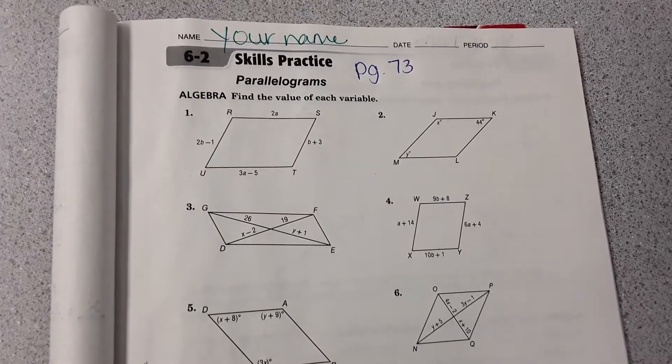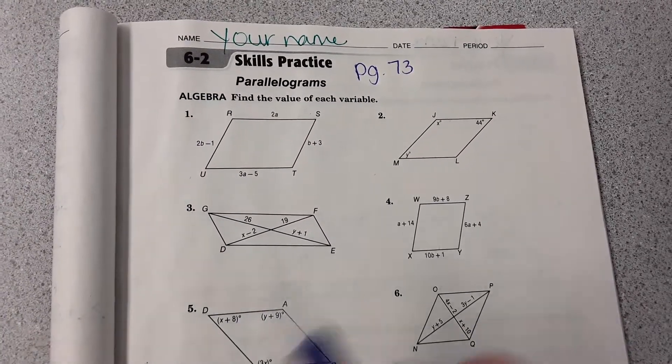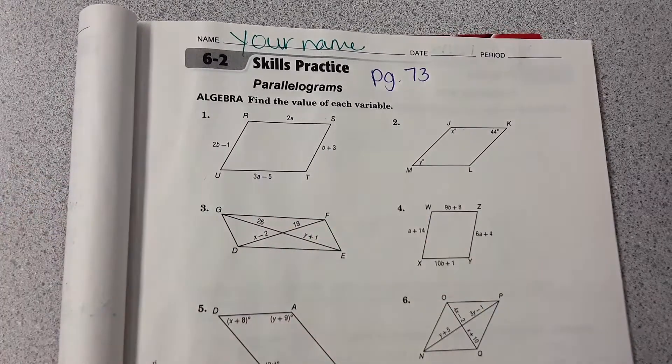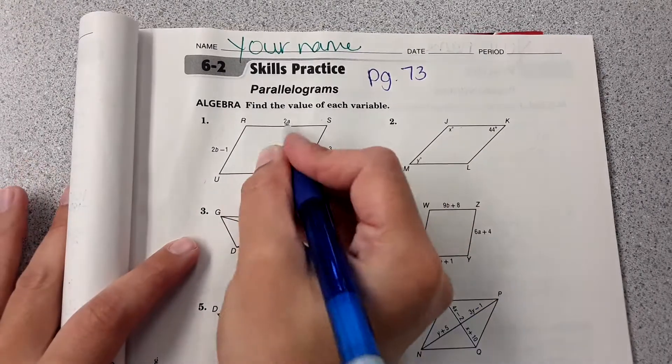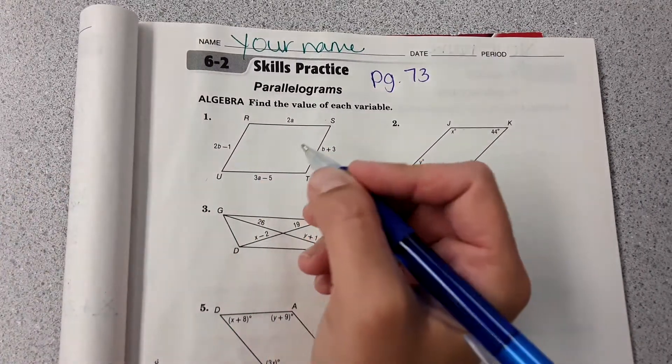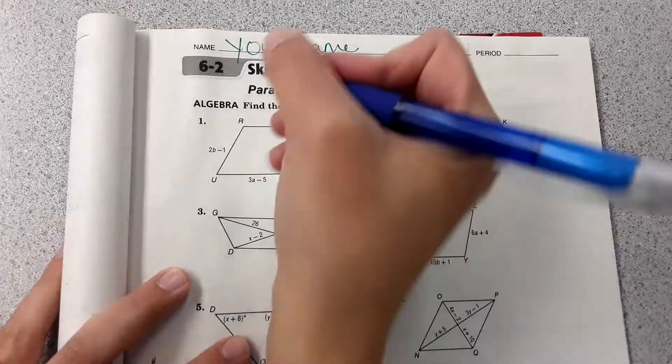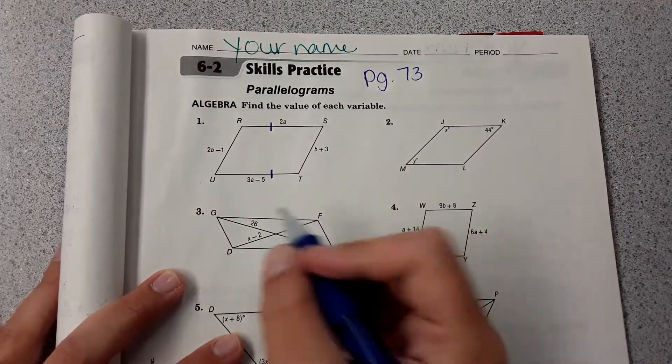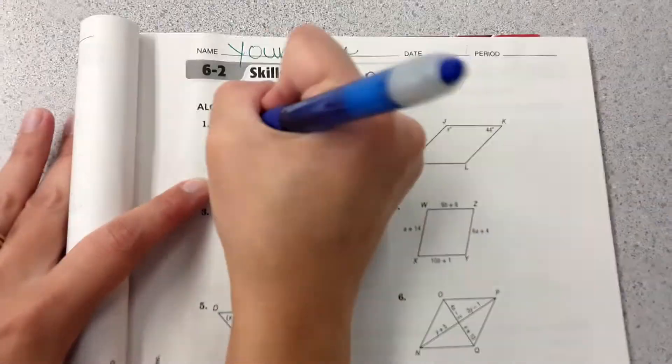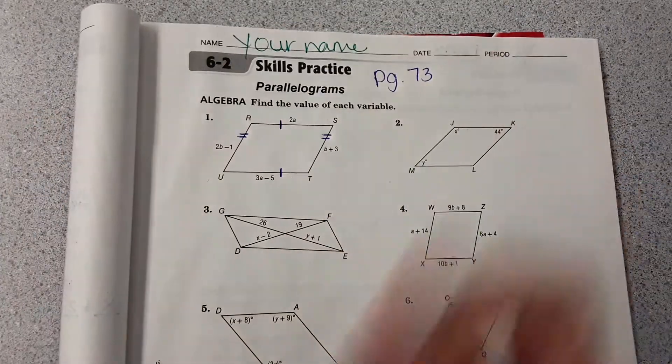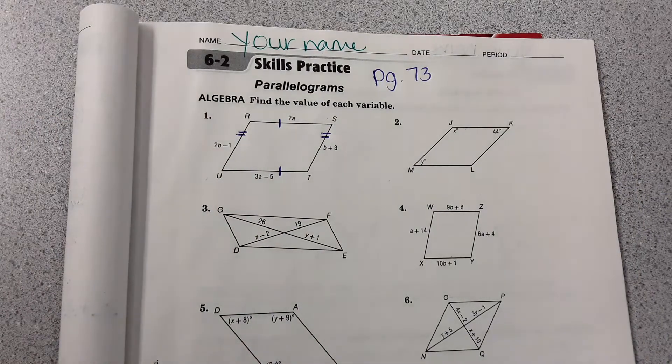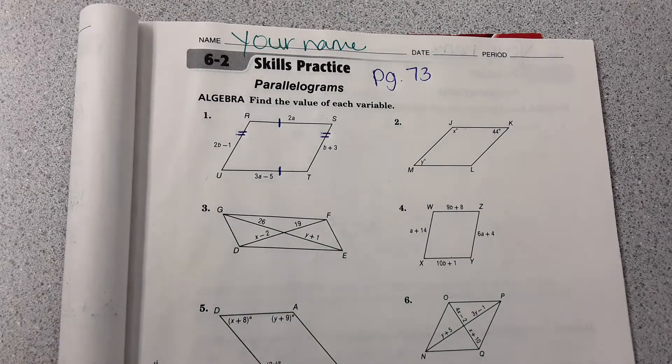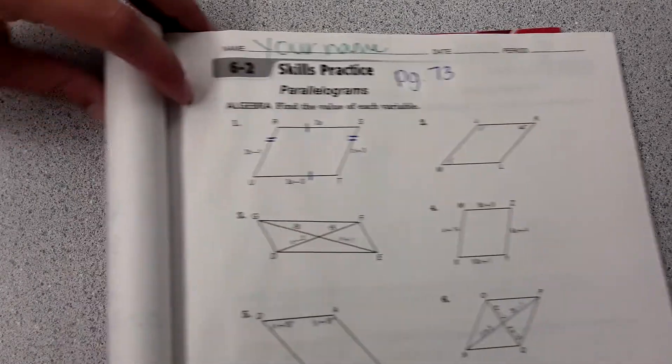Okay, so now based on the rules that we wrote down, we're going to solve for variables in these problems. Number one shows us expressions for each side length of the parallelogram. We learned that in parallelograms, the opposite sides are congruent, so this is the same length as its opposite, and this is the same length as its opposite side over here. Because of that, we can set the expressions equal to solve for the variable.